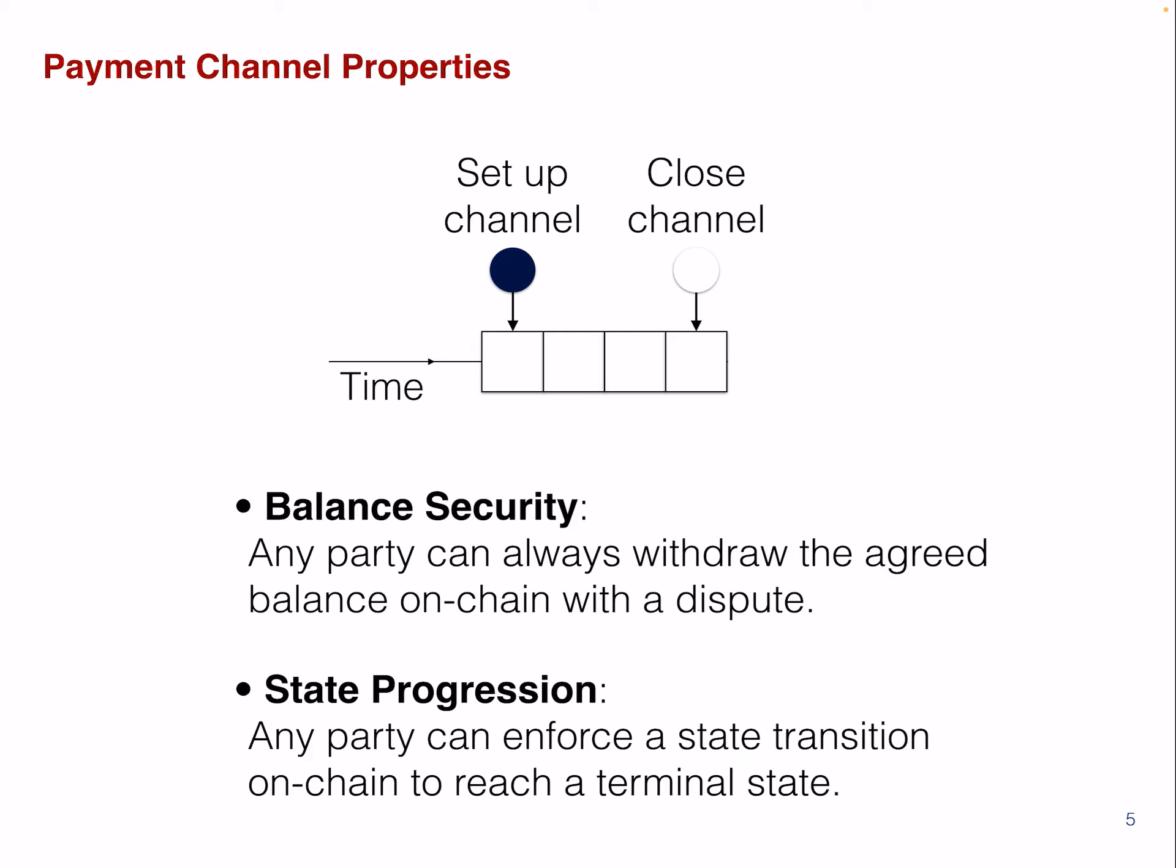We also want to have the so-called state progression. This means we don't want to get stuck. So any party can enforce a state transition on-chain and reach then a terminal state. So we always want to be able to exit, if we want, out of this channel. And we don't want that the other party can somehow freeze the state.